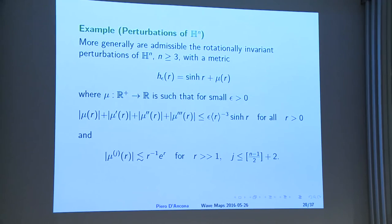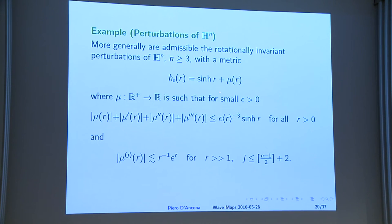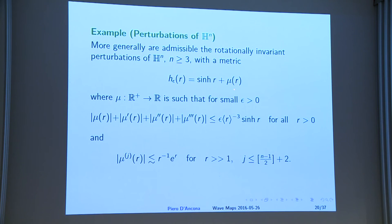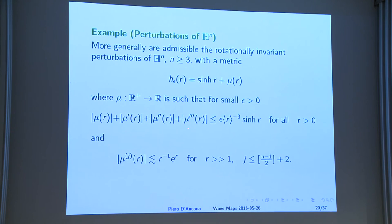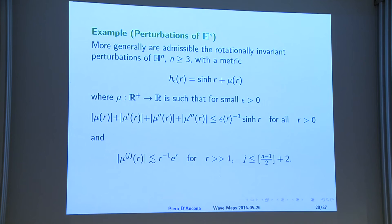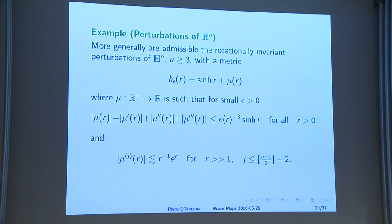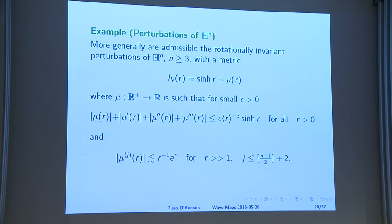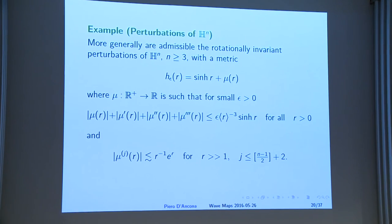Immediately you can perturb hyperbolic space H^n: instead of just hyperbolic sine, consider any perturbation mu satisfying a set of decay conditions with epsilon sufficiently small. Notice that hyperbolic sine grows exponentially, so this condition is effective only for r small; for r large, many geometries are included. We have a whole class of perturbations — and 'perturbation' may not be the correct term, because at infinity the metric can be quite far from H^n.